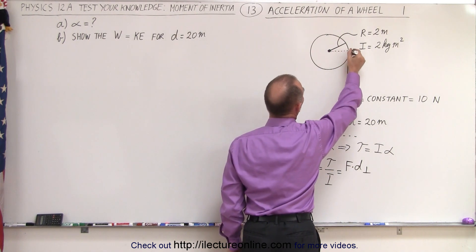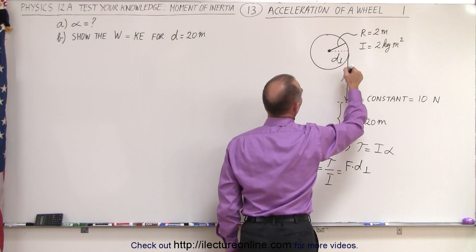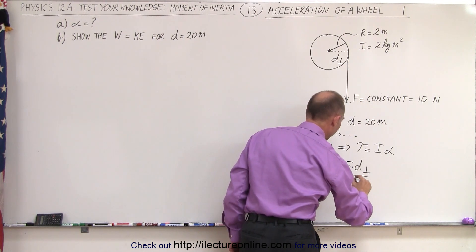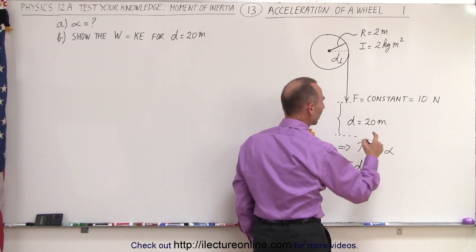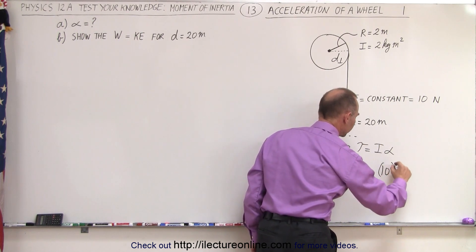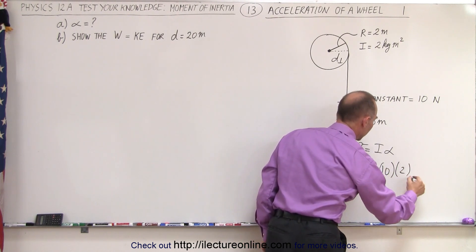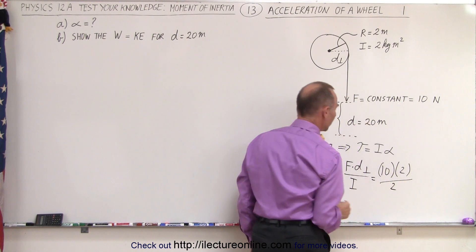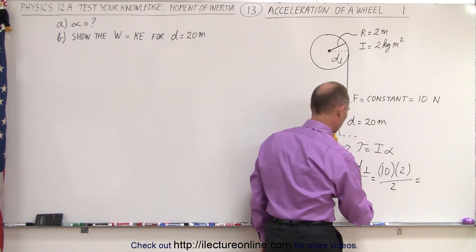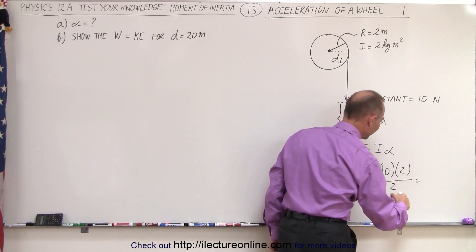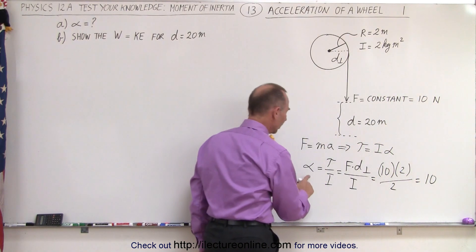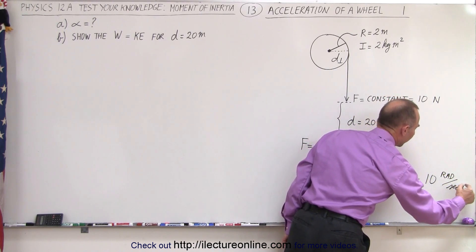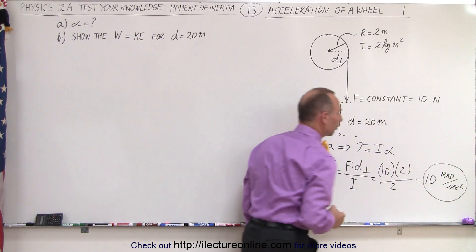So this here would be the perpendicular distance, and the force would be the 10 newtons. And so we divide that by the moment of inertia. So in this case, the force is 10 newtons, the distance would be 2 meters, and the moment of inertia is 2 kilogram meters squared. So that would be equal, well moment of inertia is kilogram meters squared, I should say, the two's cancel, and we end up with the angular acceleration of 10 radians per second squared. So that's our first answer.